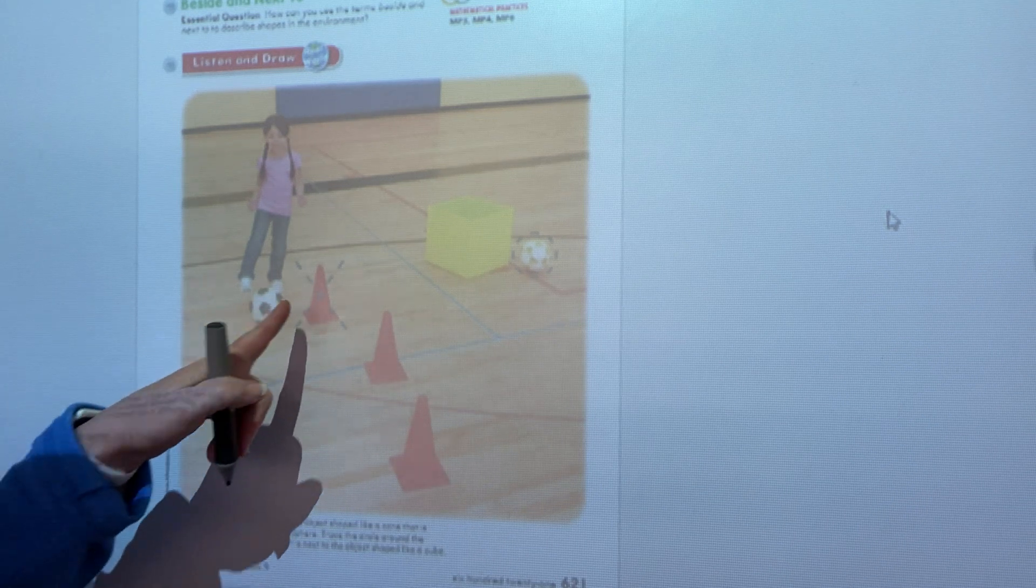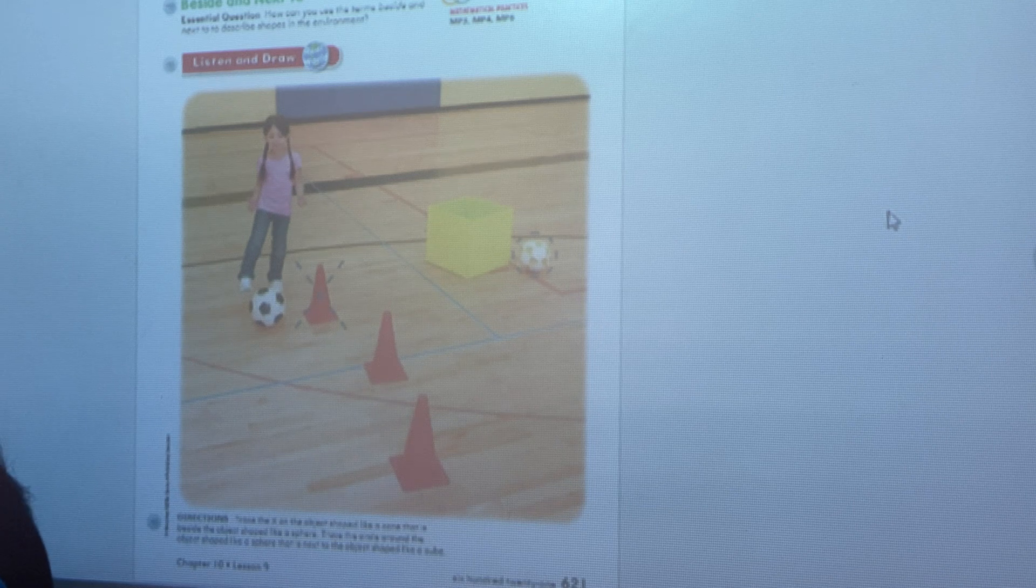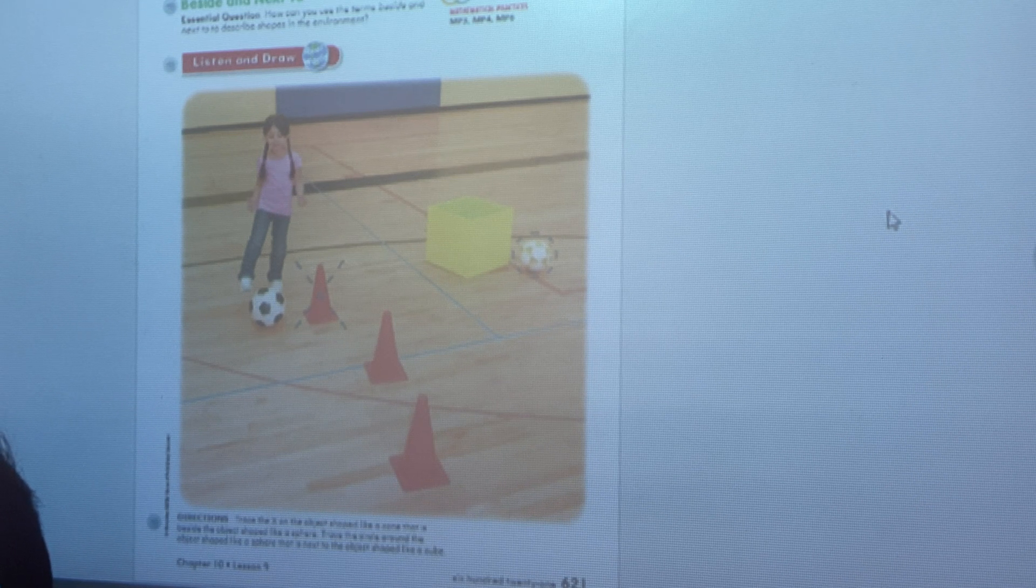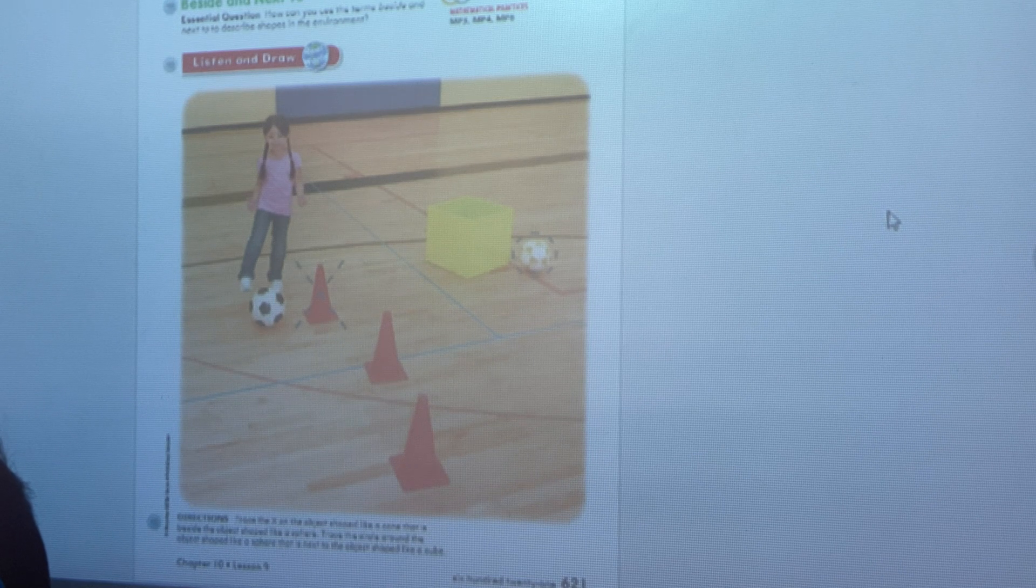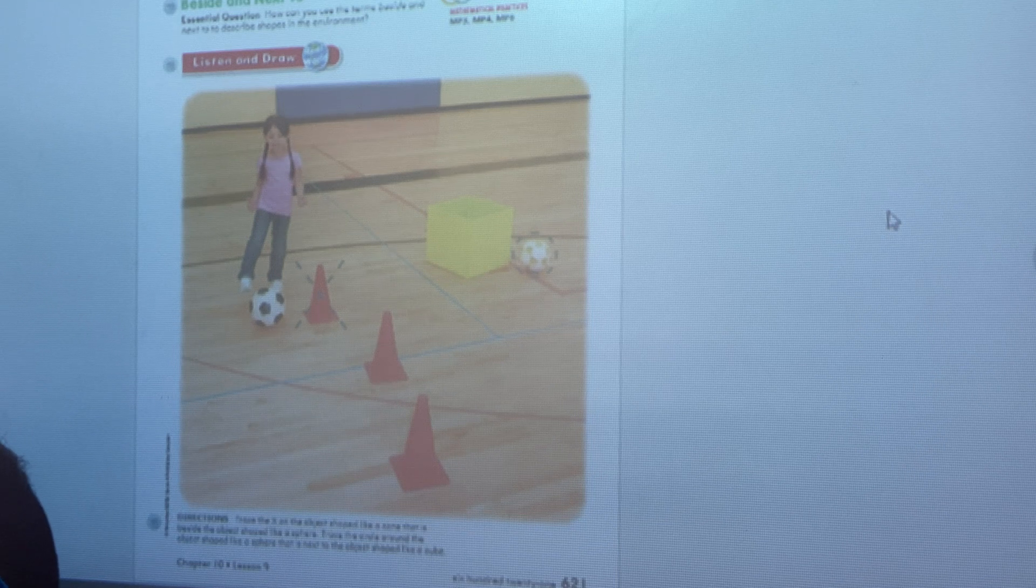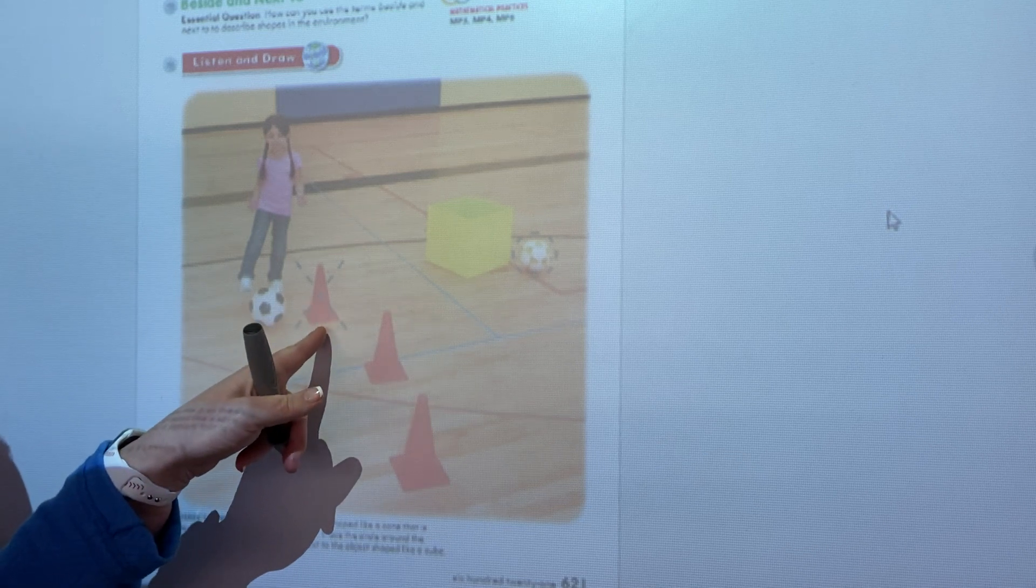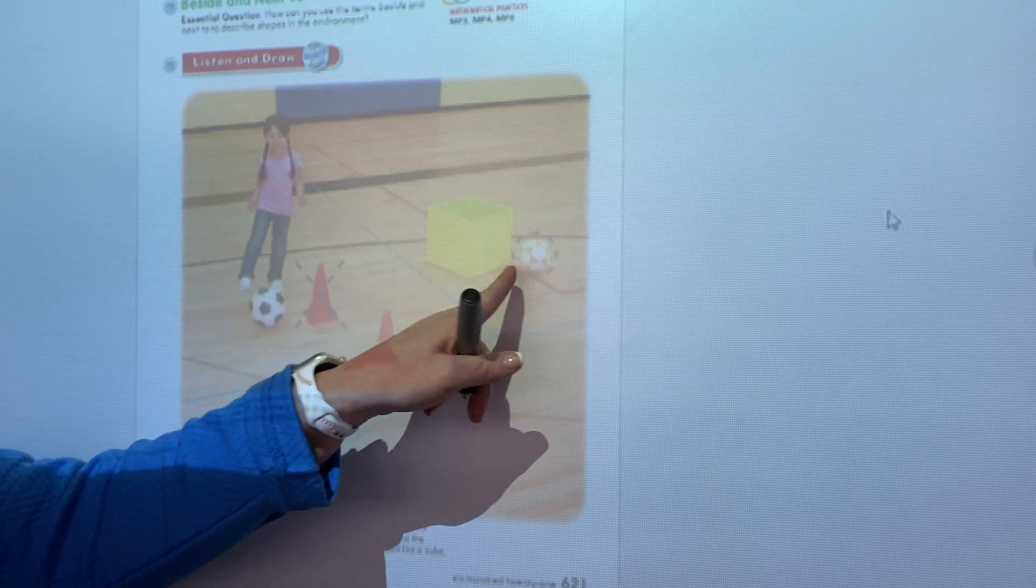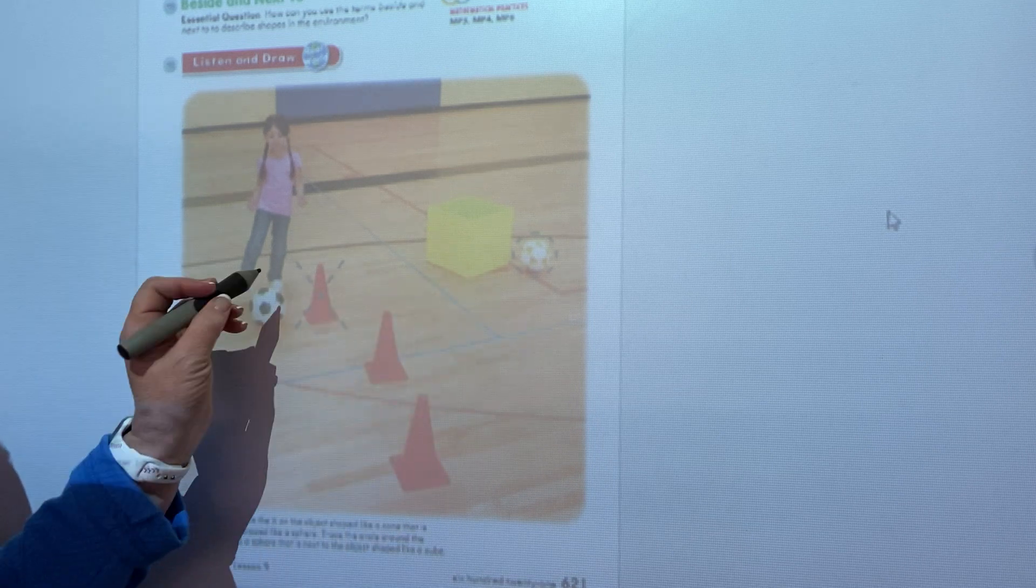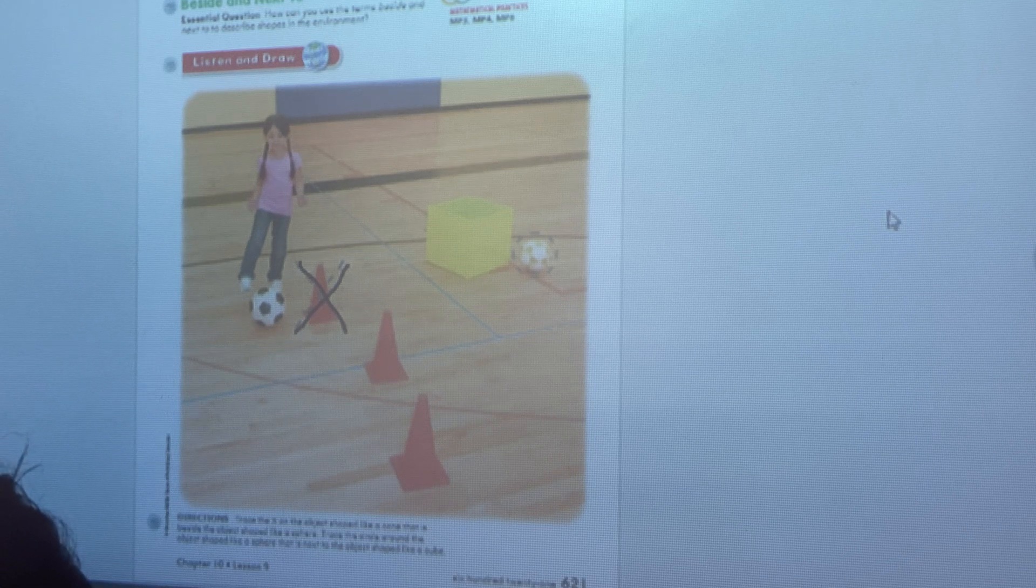Let's go ahead and get started. They have an X and a circle. I would like you to trace the X on the object shaped like a cone that is beside the object shaped like a sphere. So they want us to put an X on a cone that is next to a sphere. What's next to the sphere here is not a cone. So this would be the cone that we would put an X on.